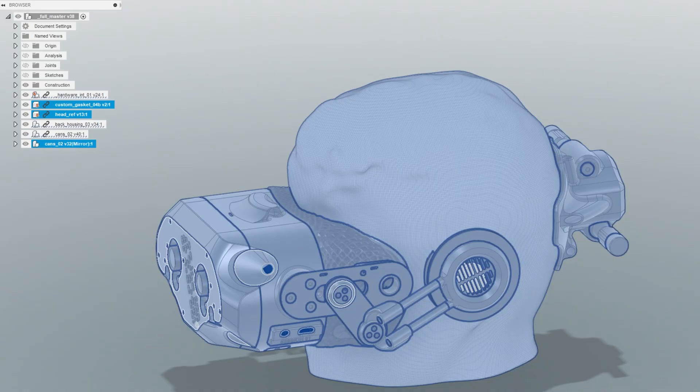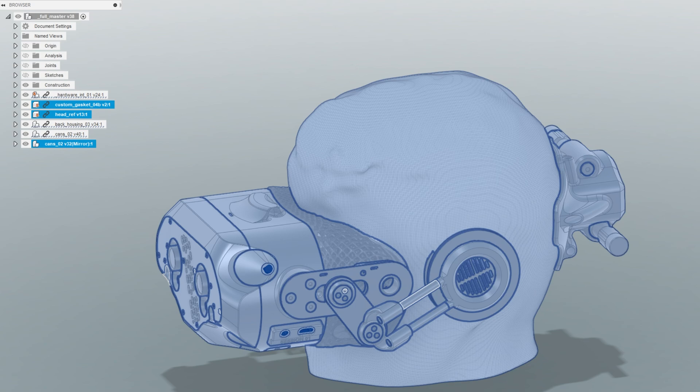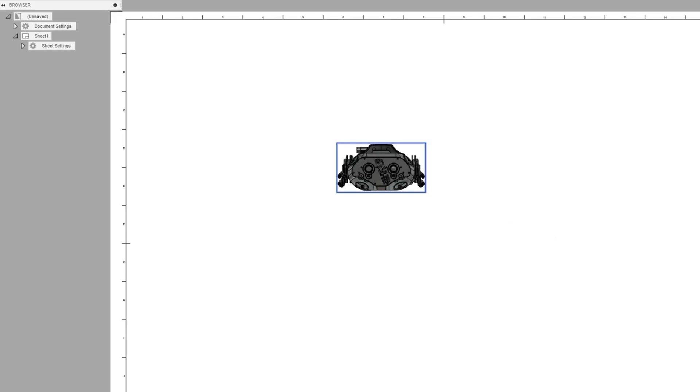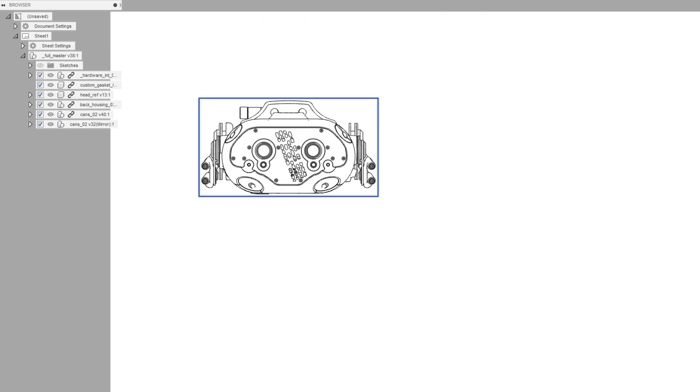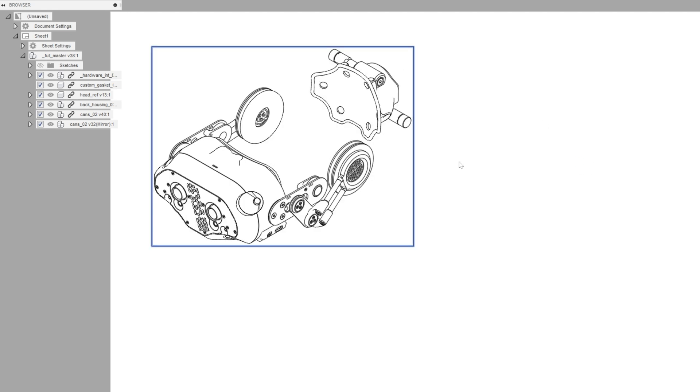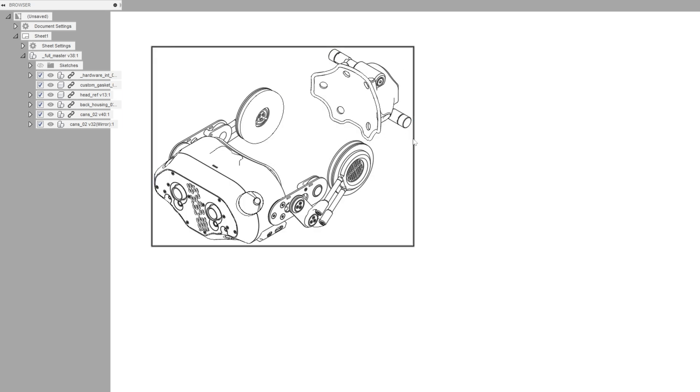So my first step is going to be getting a final BOM together for this project. A bill of materials is just an itemized list of parts and quantities for each component on the project. Once this is generated, I can use it to get together any parts I need to order and track my 3D prints to make sure I don't lose track of anything. Pretty much all parametric software has some ability to create drawing packages with a BOM. This includes Fusion 360.